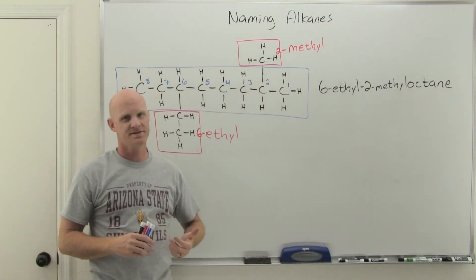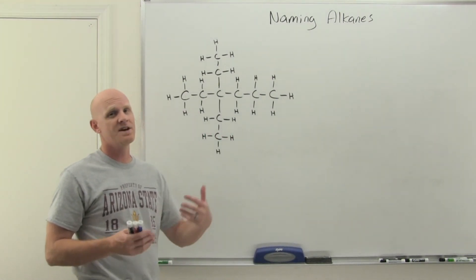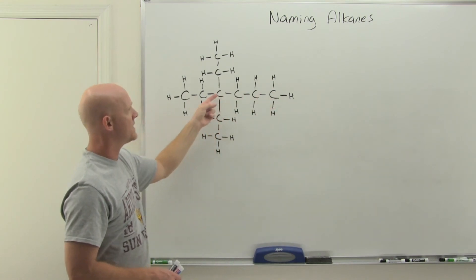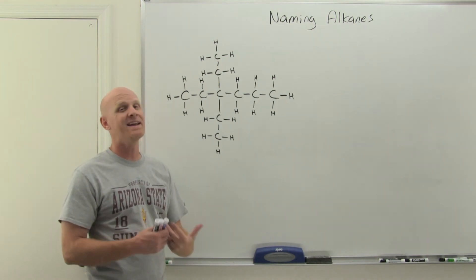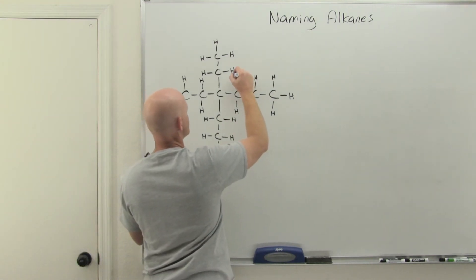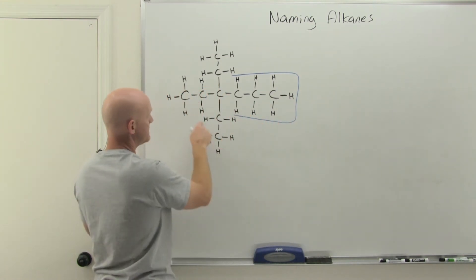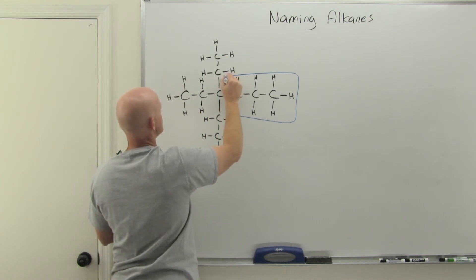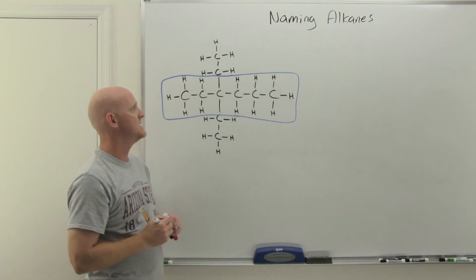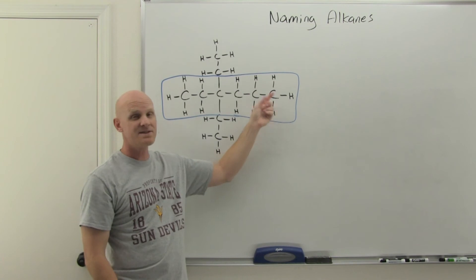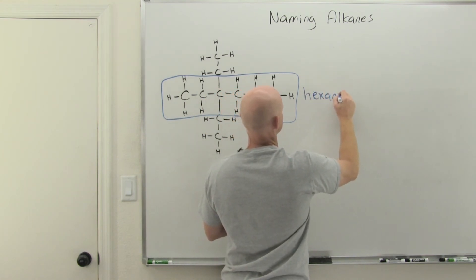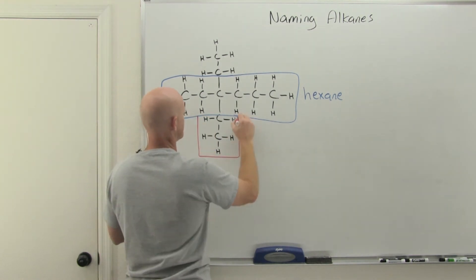So this compound is named 6-ethyl-2-methyloctane. In our next example, we again need to find the longest continuous carbon chain. There's a branch point here with three carbons going off to the right, and two carbons going up or down in any direction — any one of those could be part of the longest chain. The longest continuous chain here is six carbons long, and since the prefix for six is 'hex,' the parent chain is hexane. That leaves two substituents coming off the chain.